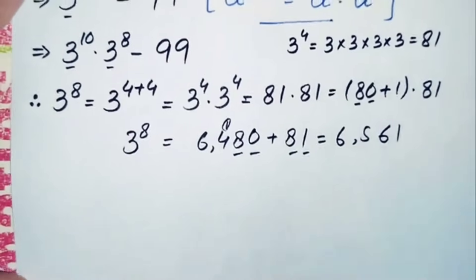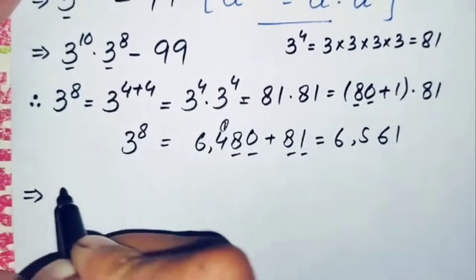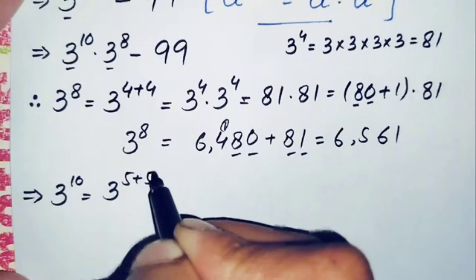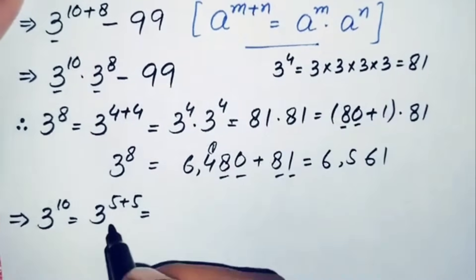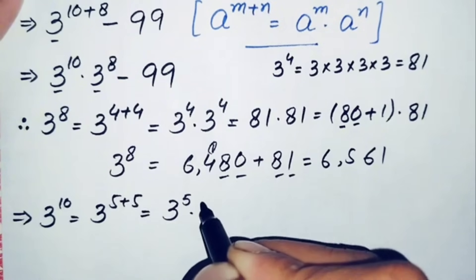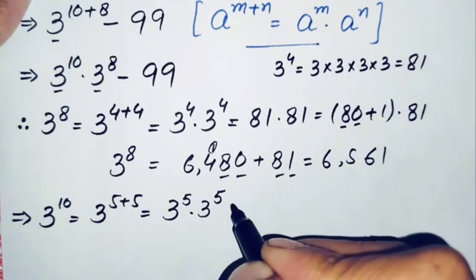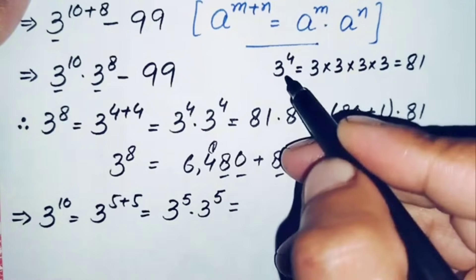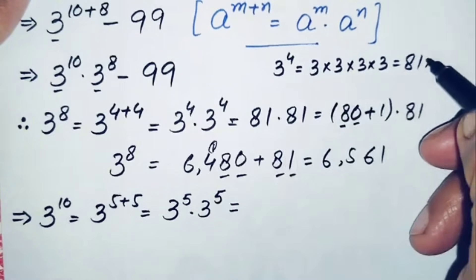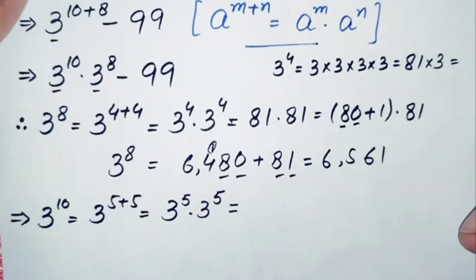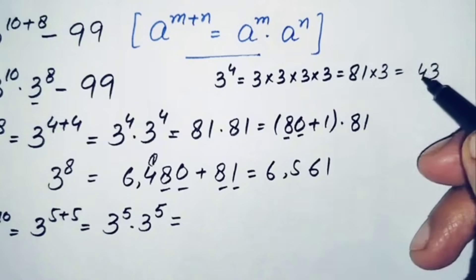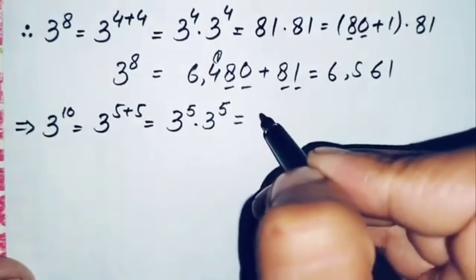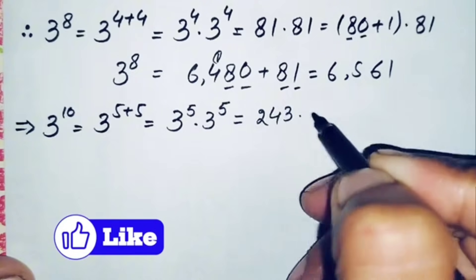Now we find the value of 3^10. We write 10 as 5 plus 5, so 3^10 = 3^5 × 3^5. To find 3^5, we multiply 3^4 (which is 81) by 3: 3×1=3 and 3×8=24, so 3^5 = 243. Therefore 3^10 = 243 × 243.